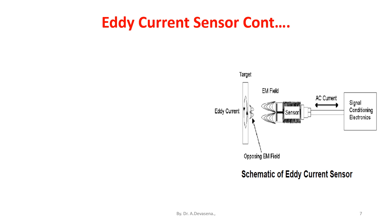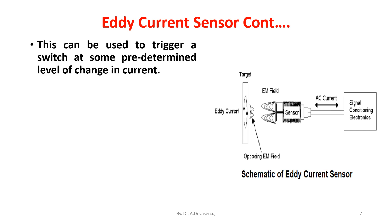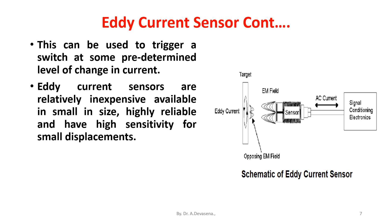This can be used to trigger a switch at some predetermined level of change in current. Eddy current sensors are relatively inexpensive, available in small size, highly reliable, and have high sensitivity for small displacements.